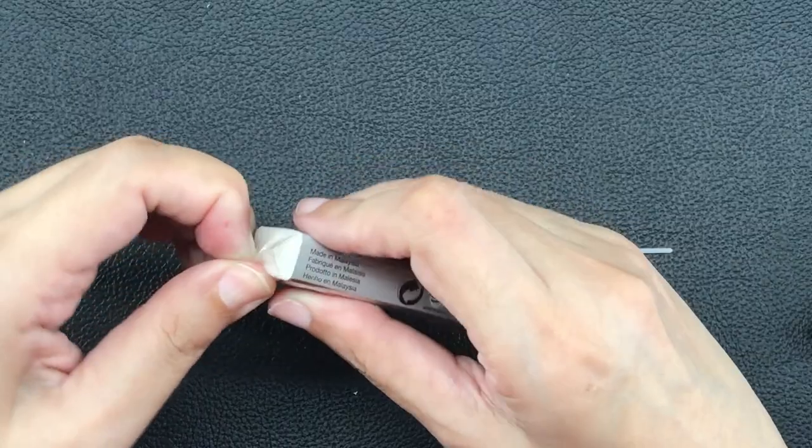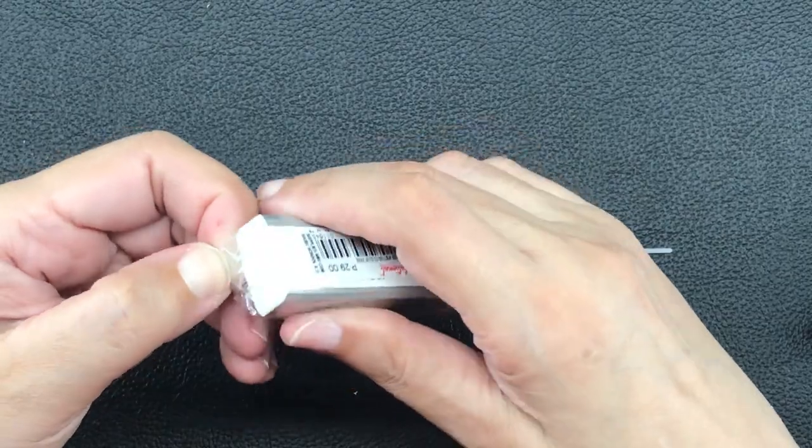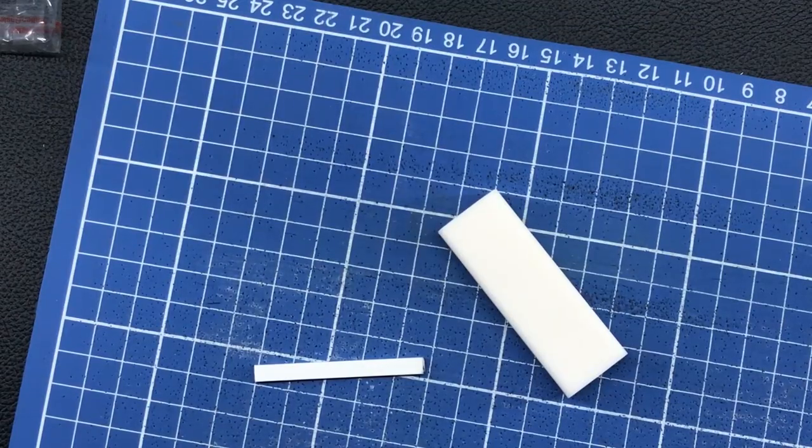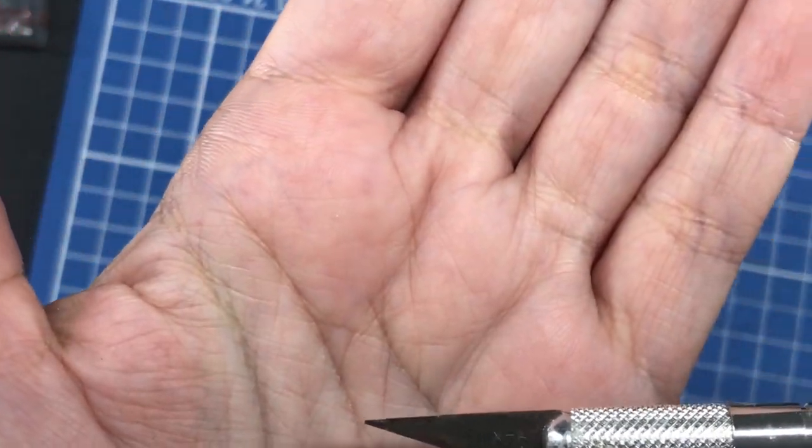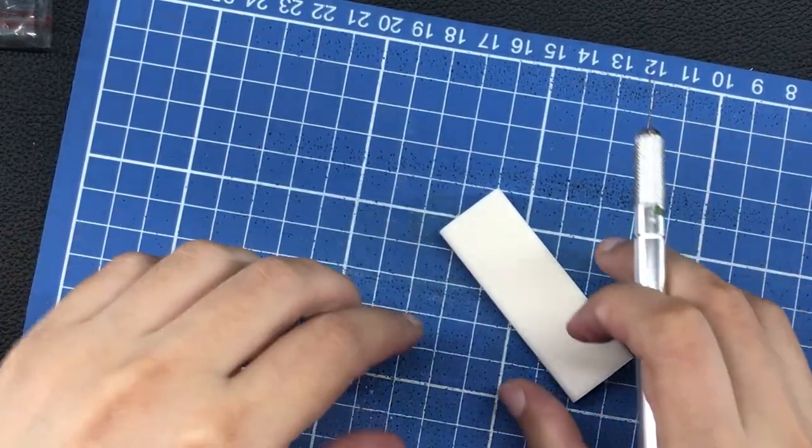And I also want to be able to clip this eraser pen into the pen loop of my catch-all notebook so it can be more handy and I won't lose it. So what I did, stay with me here, what I did is I decided to try cutting down a block of the dust free eraser and fit it into the barrel of the Tombow.